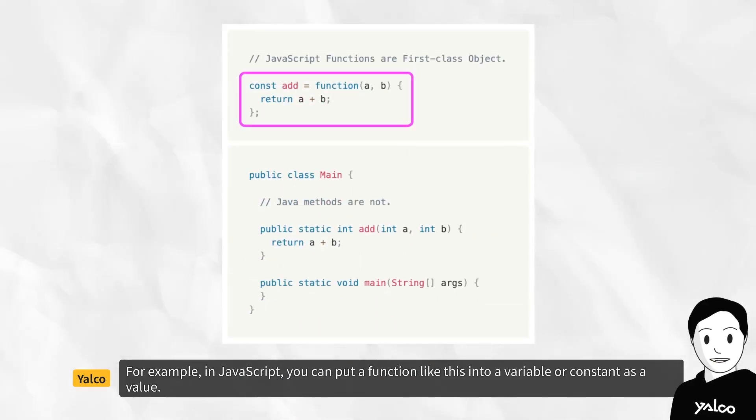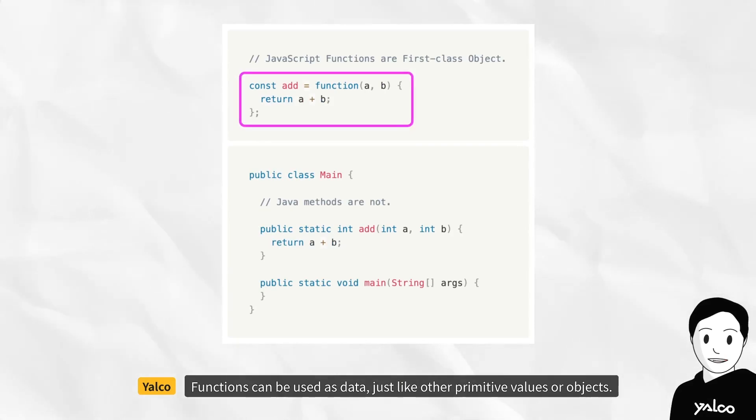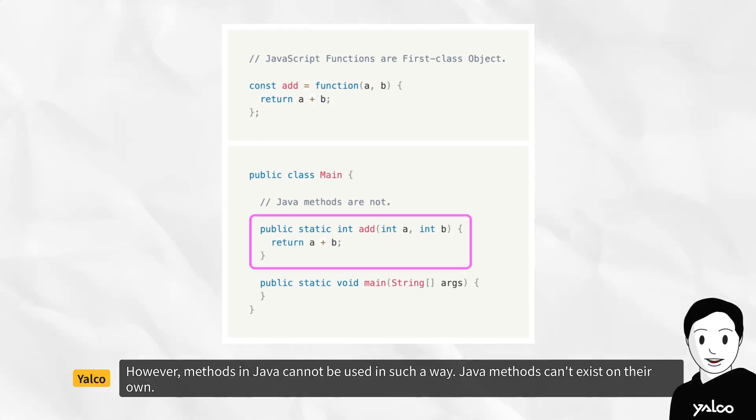For example, in JavaScript, you can put a function like this into a variable or constant as a value. Functions can be used as data, just like other primitive values or objects. However, methods in Java cannot be used in such a way.